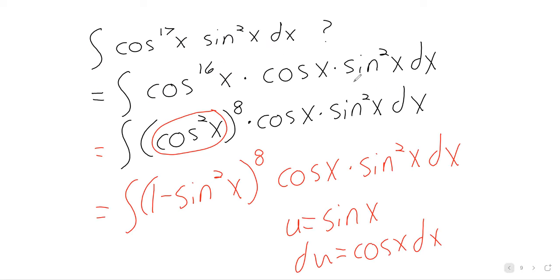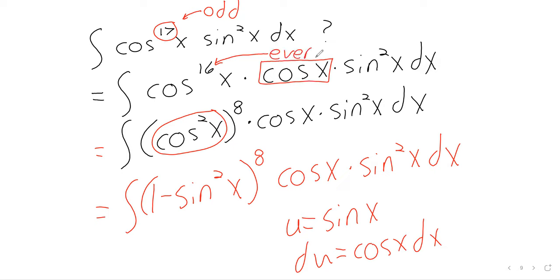Why can't this same trick work if we have even powers? Going back to the trick, you see that we have an odd power, and when we pull a cosine out, this turns into an even power. The reason that's important is that only an even power can be written as a square — cosine squared to any power is even.